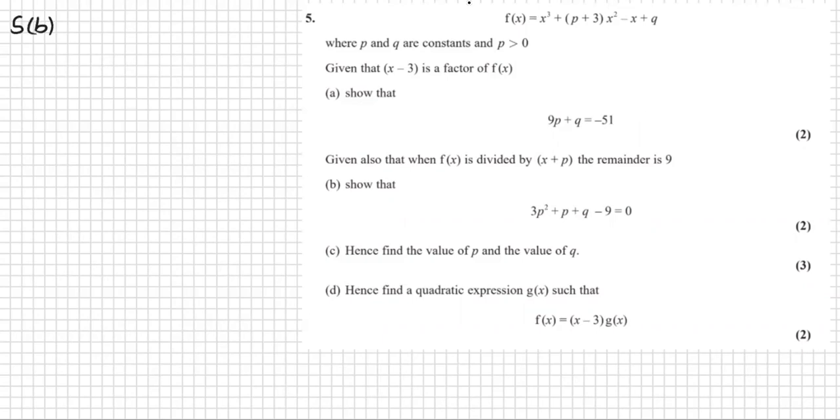5B is also given. It's further given that when F of X is divided by X plus P, the remainder is 9. So the same logic as before with the factor, but we can say that when F of X is divided by X plus P, then we're going to be left over with 9. So same logic as before. That means when X is equal to negative P, then Y is equal to 9. So let's put all that information in.